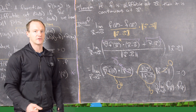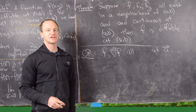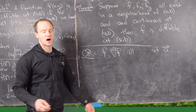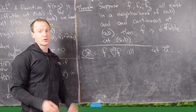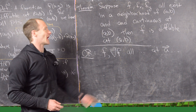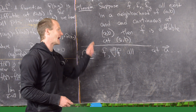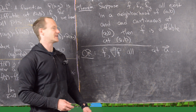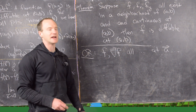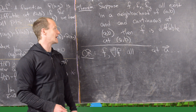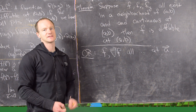To finish, I want to point out a partial converse — outside the scope of this course to prove, but we can use it. It says: if f, f_x, and f_y all exist in a neighborhood around (a,b) and are continuous at (a,b), then f is differentiable at (a,b). In vector form: if f and ∇f all exist in a neighborhood of vector a and are continuous at vector a, then f is differentiable at vector a.